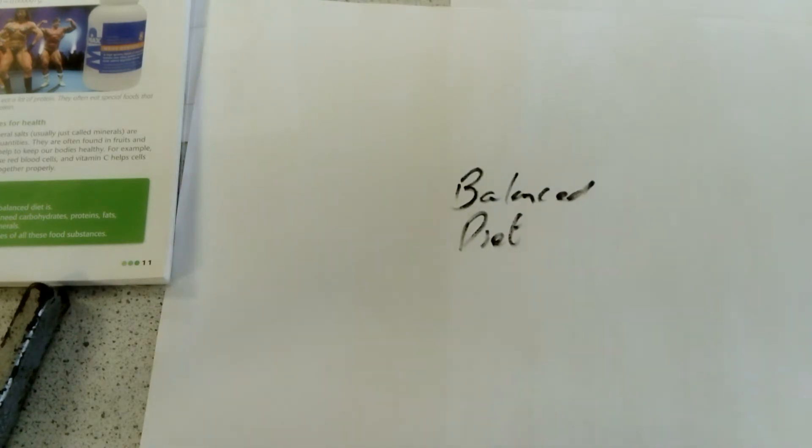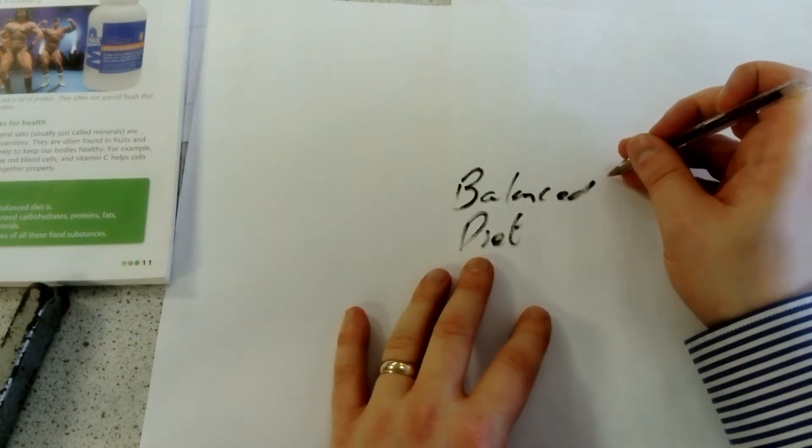Put 'balanced diet' in the middle, then you're going to expand on it. But it's not like doing a mind map - it needs to be a bit more detailed.